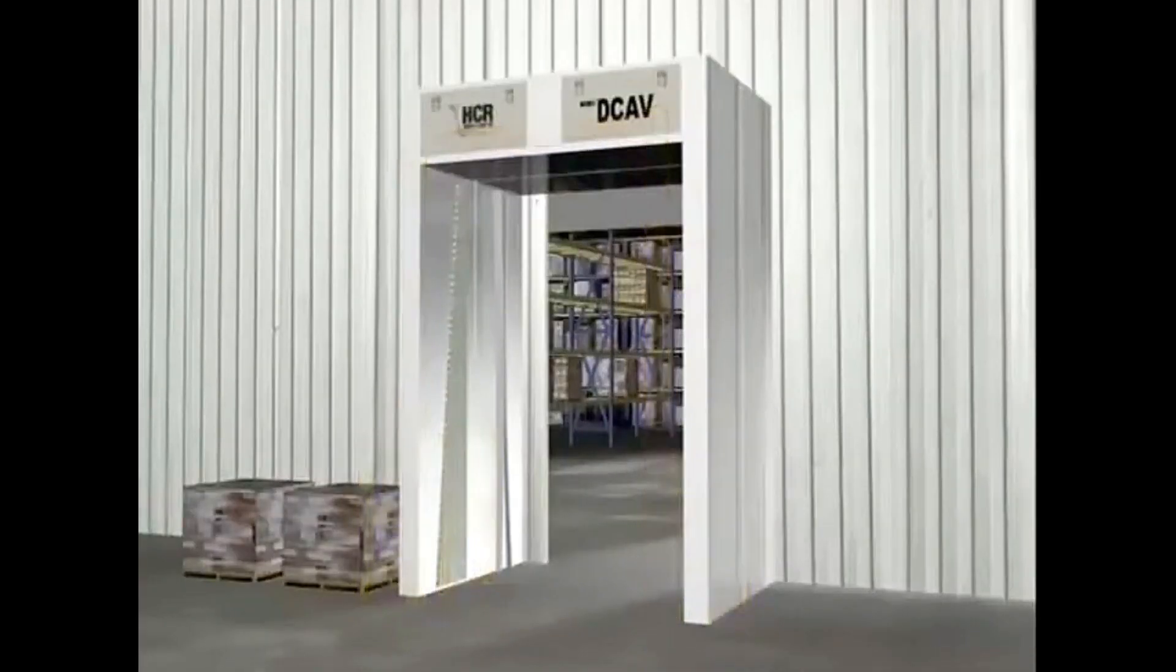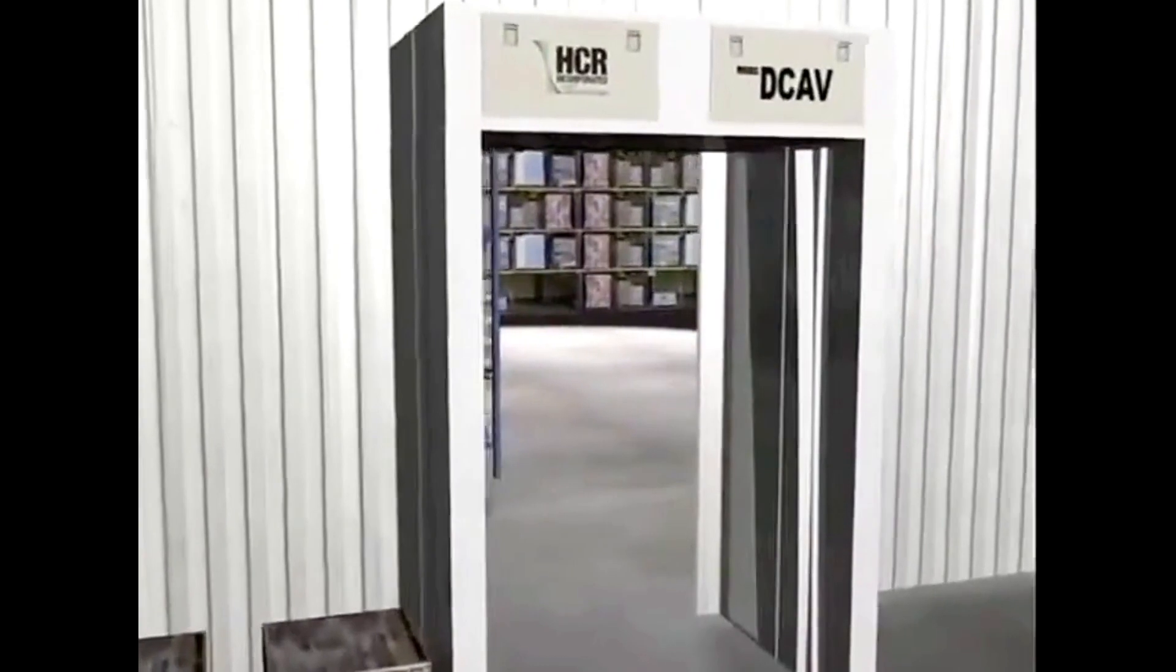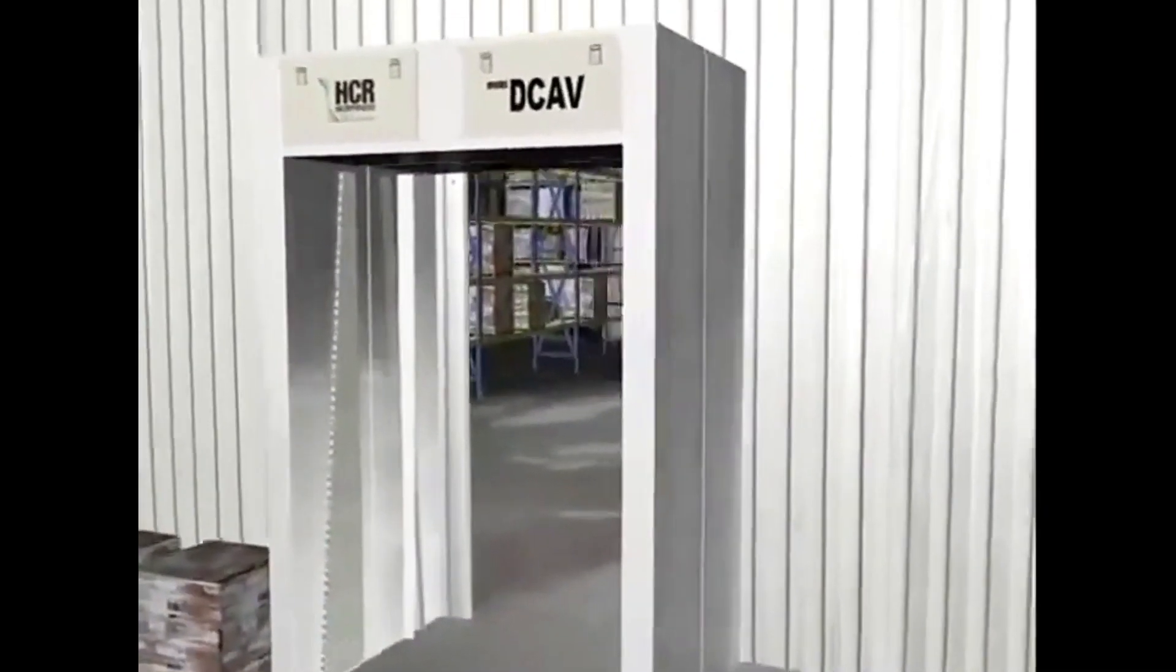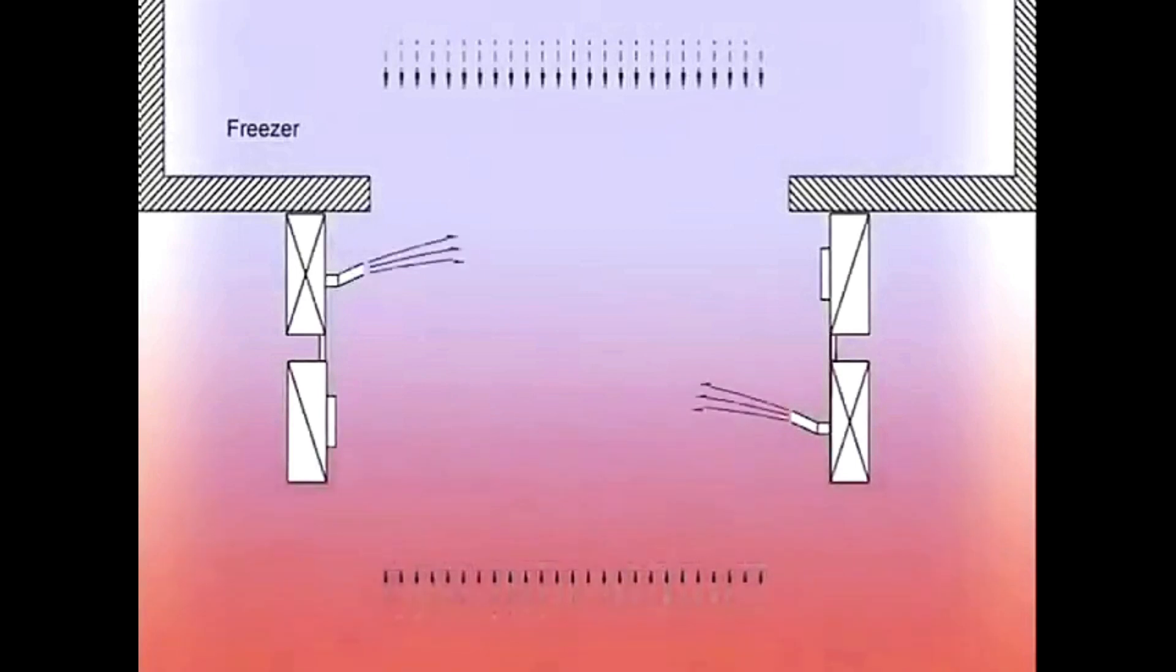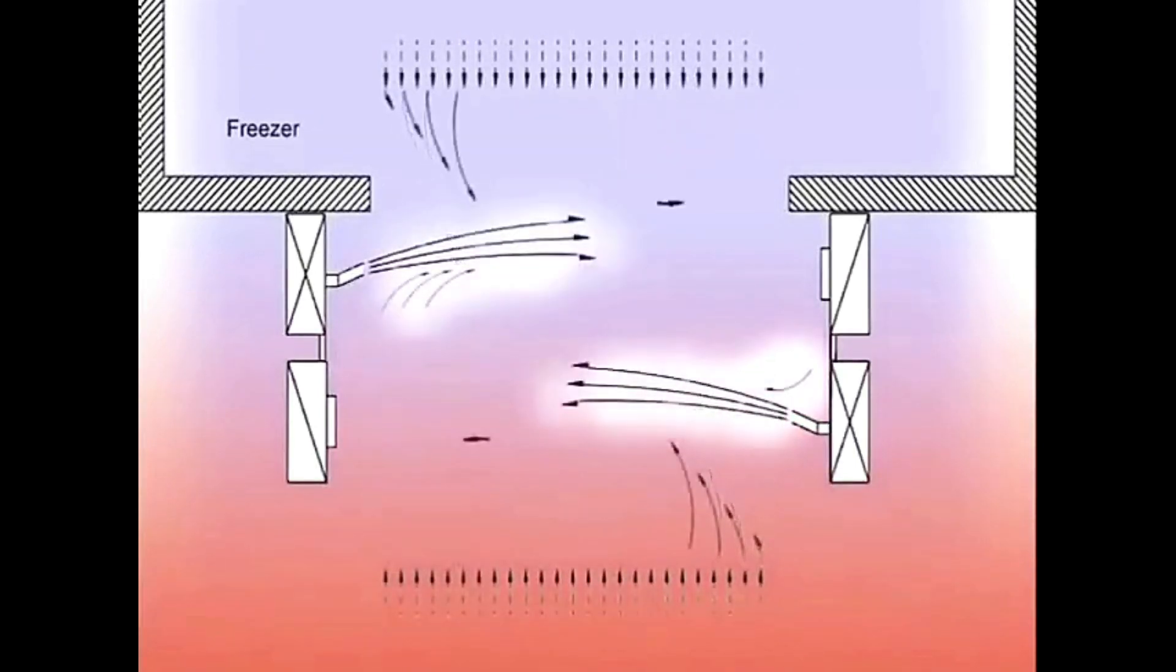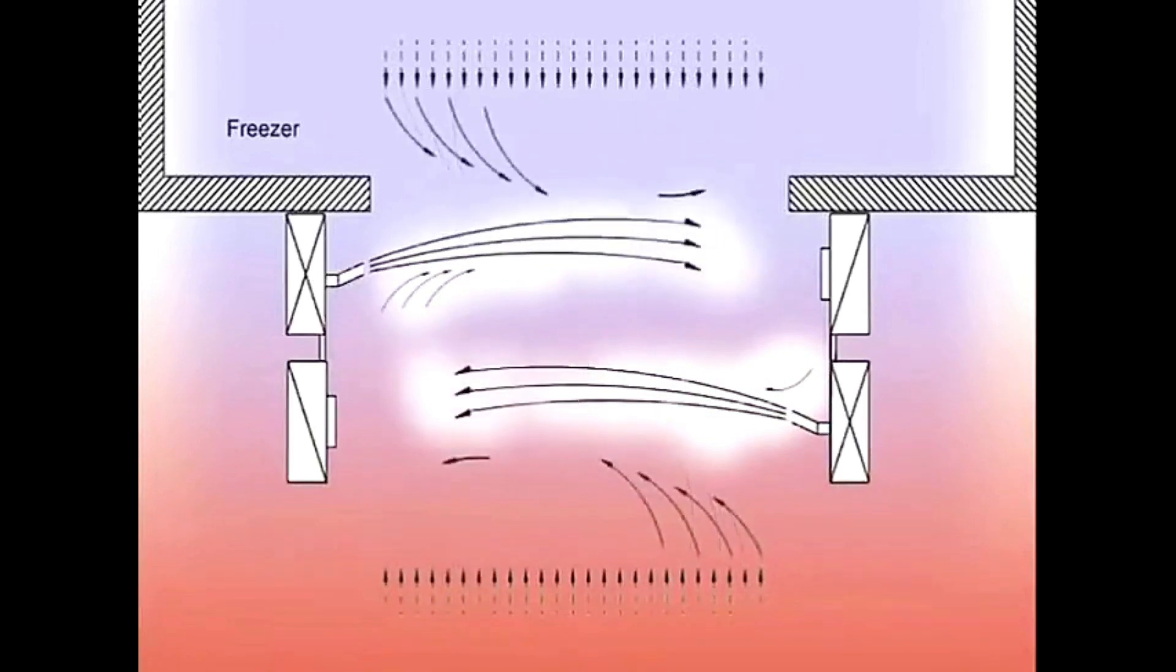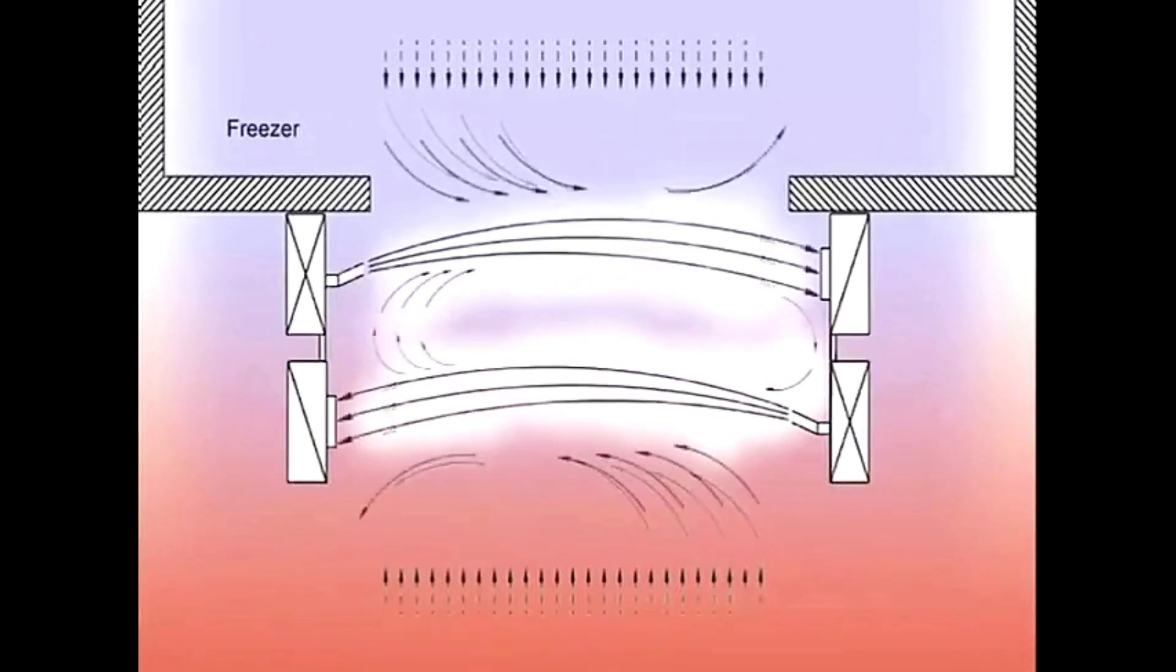With model DCAV, or double-conditioned air vestibule, the door induces airflow patterns like the single air curtain. When two are placed together and designed to work in harmony, it creates an air vestibule between the two airstreams, where the air is captured and treated to a non-frost, non-fog state. This model creates a vestibule with no visible doors.